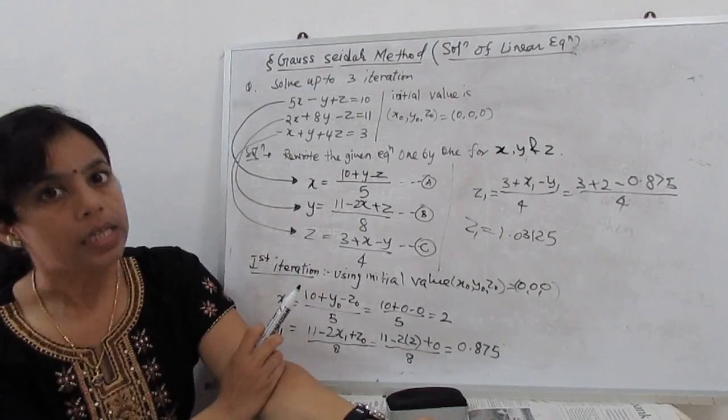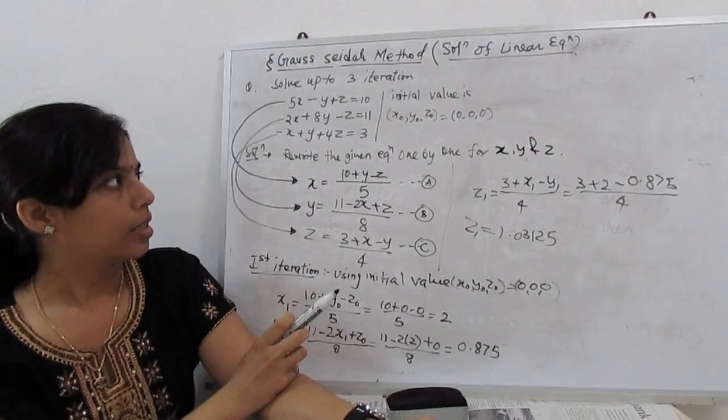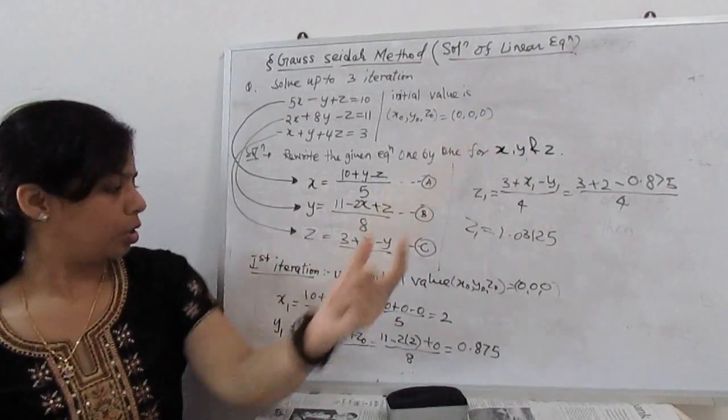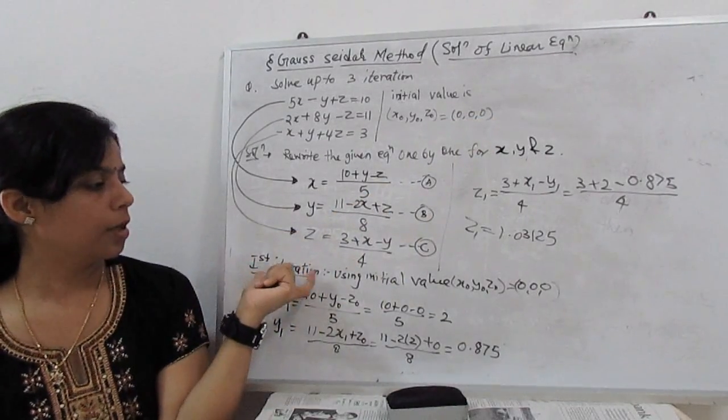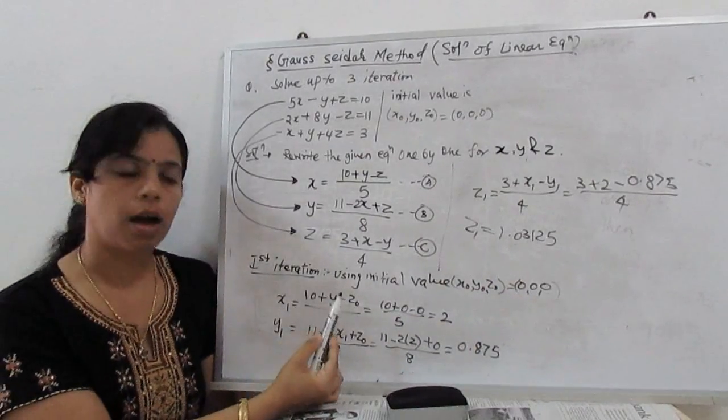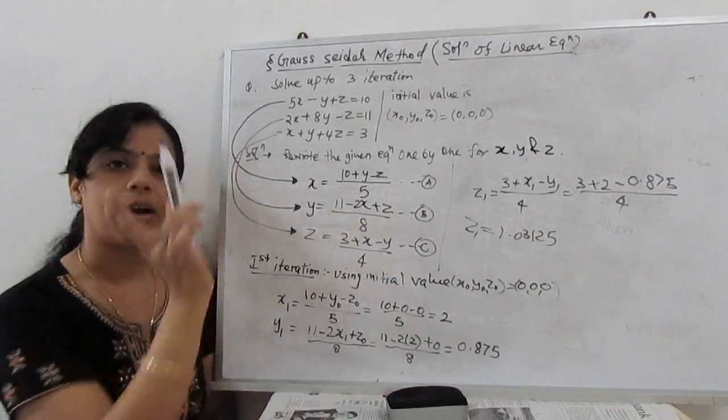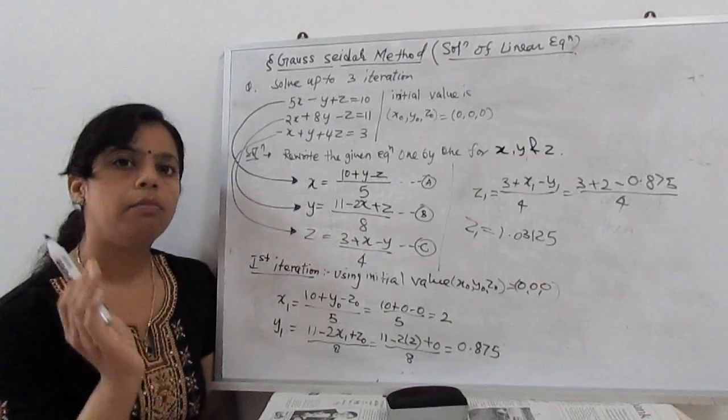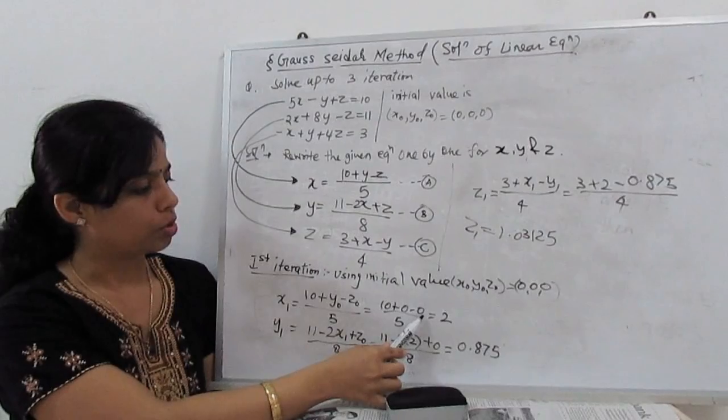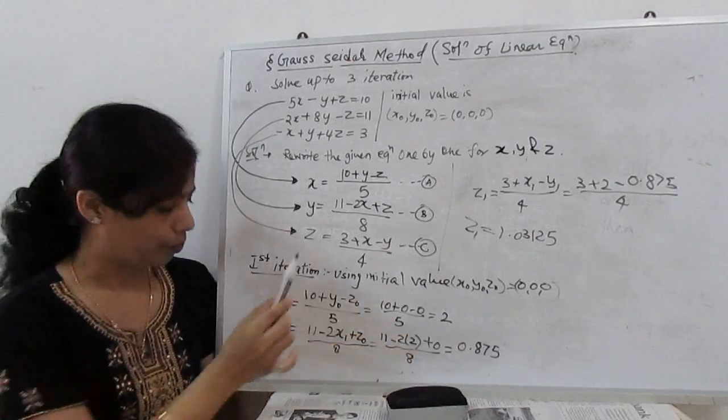We start the iteration with the help of the initial given value. What are the initial given values? X0, Y0, and Z0 equal to 0, 0, 0. For first iteration, using the initial value, my X1 is coming by (10 + Y0 - Z0)/5. This is the same step in Jacobi method also. We substitute Y0 and Z0 equal to 0, 0, and the value becomes 2.